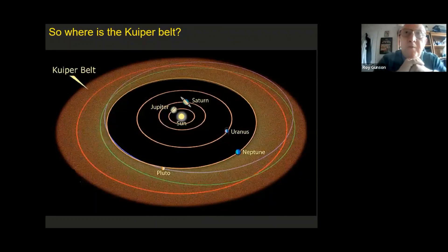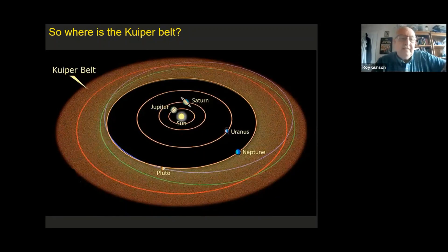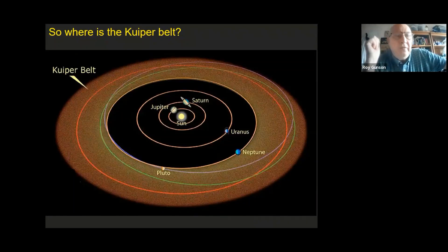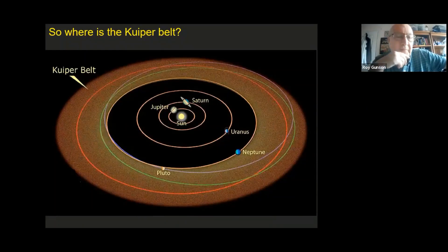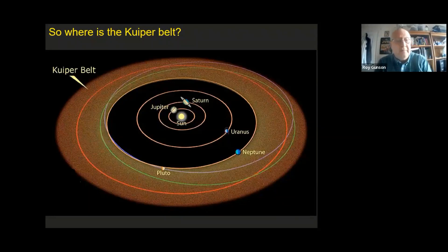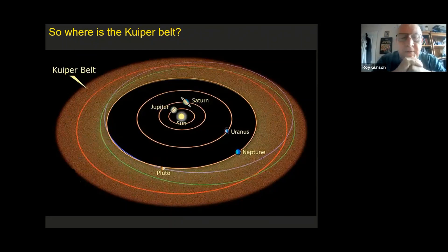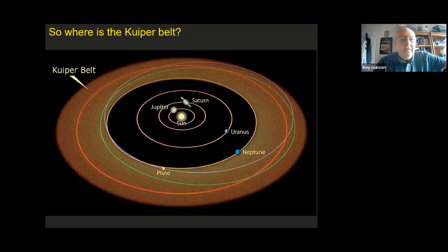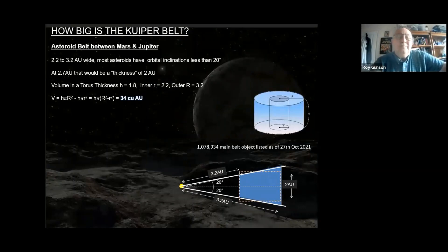Where is the Kuiper Belt? Most of you will be aware it's that region of the solar system beyond Neptune. Its outer edge, depending on which source you read, could be at 48 AU, 55 AU, or a bit further — nobody has clearly defined it. The inner edge is sometimes put at about 35 AU, but many now put it at 30 AU, which is the orbit of Neptune, as Neptunian trojans are now added to the group. Beyond the Kuiper Belt we get things called the Hills Disc and the Oort Cloud.